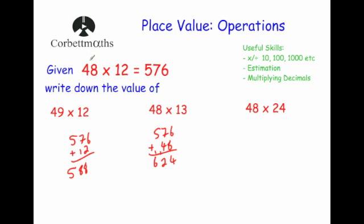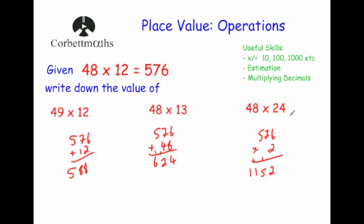And finally, instead of having 48 times 12, I've changed it to 48 times 24 — I've just doubled one of the numbers in the multiplication. If you double one of the numbers in a multiplication, that doubles your answer. So we're going to double 576: 2 times 576 equals 1,152. And that's it.